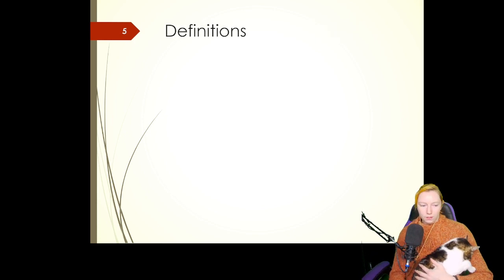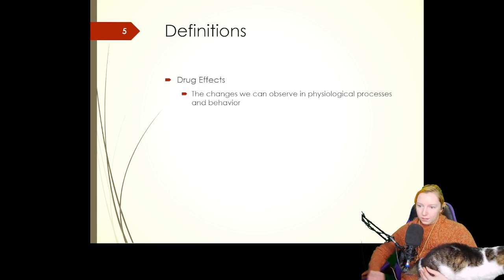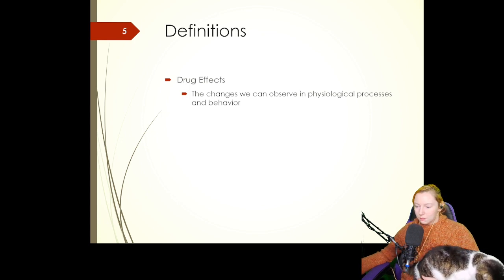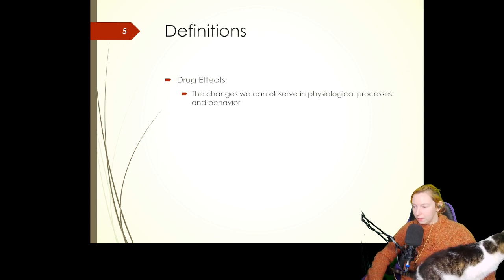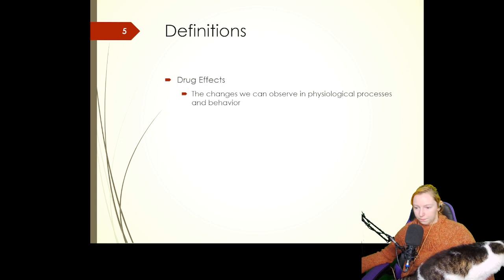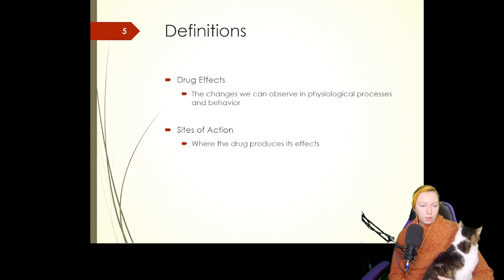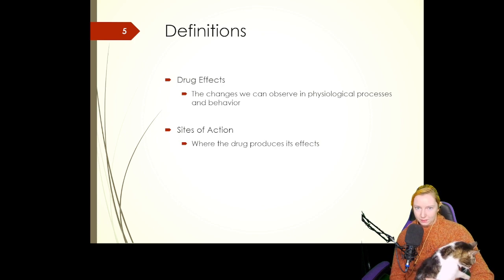Other important definitions include the effects, the site of action, and the mechanism of action. Drug effects are the changes that can be observed in physiological processes and behavior from the activity of a drug — a change in process and behavior produced in an animal, human, or biological system. The site of action is where the drug does that, and in order for a drug to be effective, it has to be able to reach the place it's intended to go.